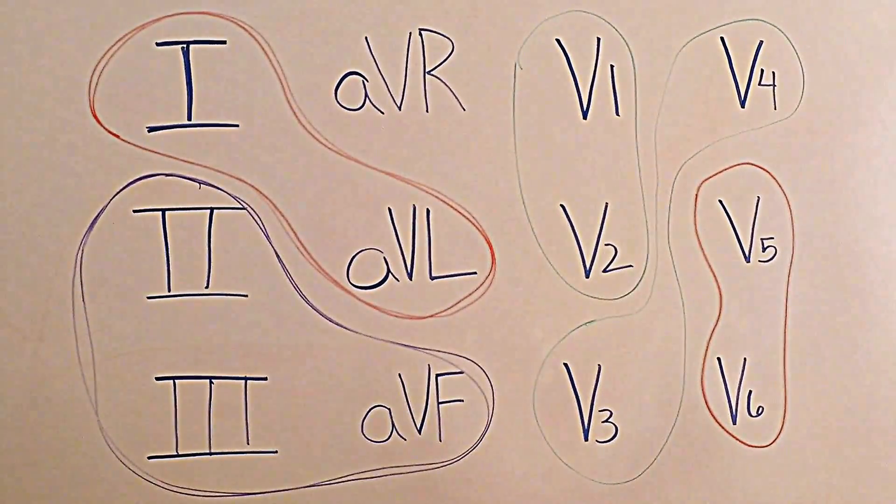Now you're going to move to leads V1 and V2, circle those together. And then last you're going to circle V3 and V4, and I do these both in green and I'll show you why in just a second.